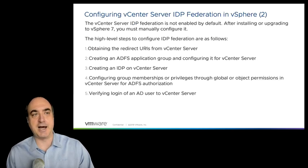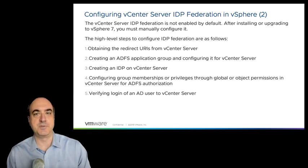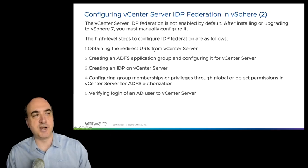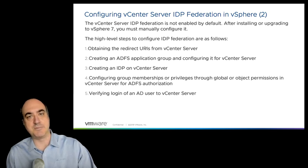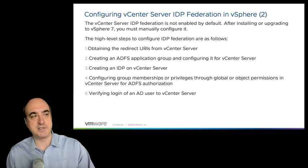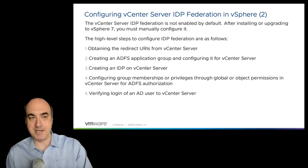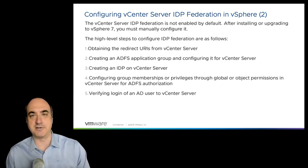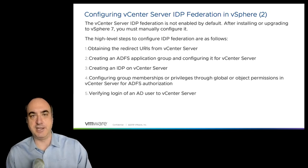Here are the basic high-level steps to set up a vCenter server identity provider federation. Step one: obtain the redirect URIs from your vCenter server, so that you can go into the ADFS system and set up the application group. Step two: create the ADFS application group in ADFS. This is done by the ADFS admin team and configured for vCenter, including the vCenter URI. It will generate a client ID and a secret key.